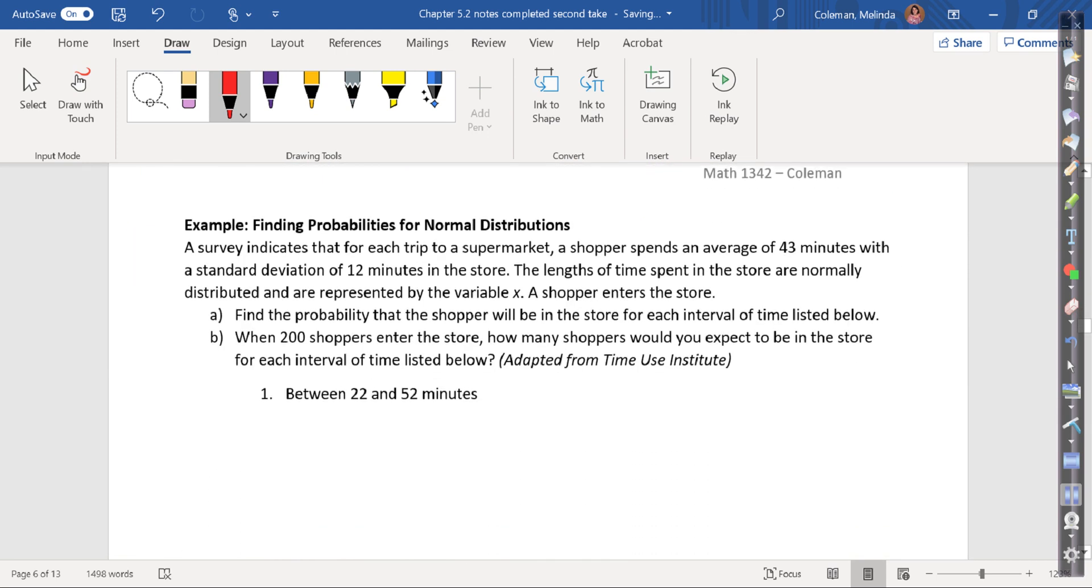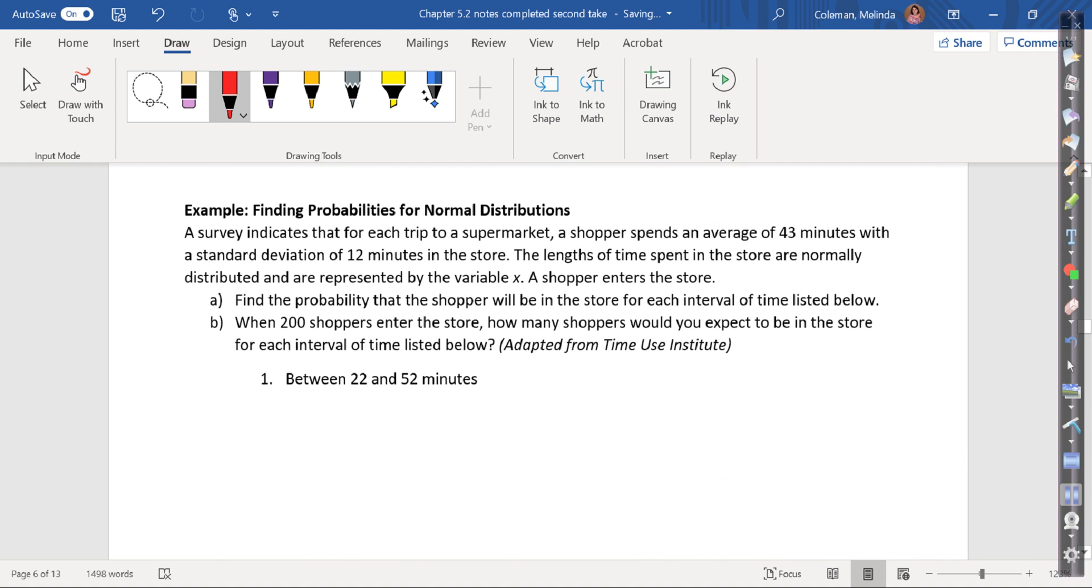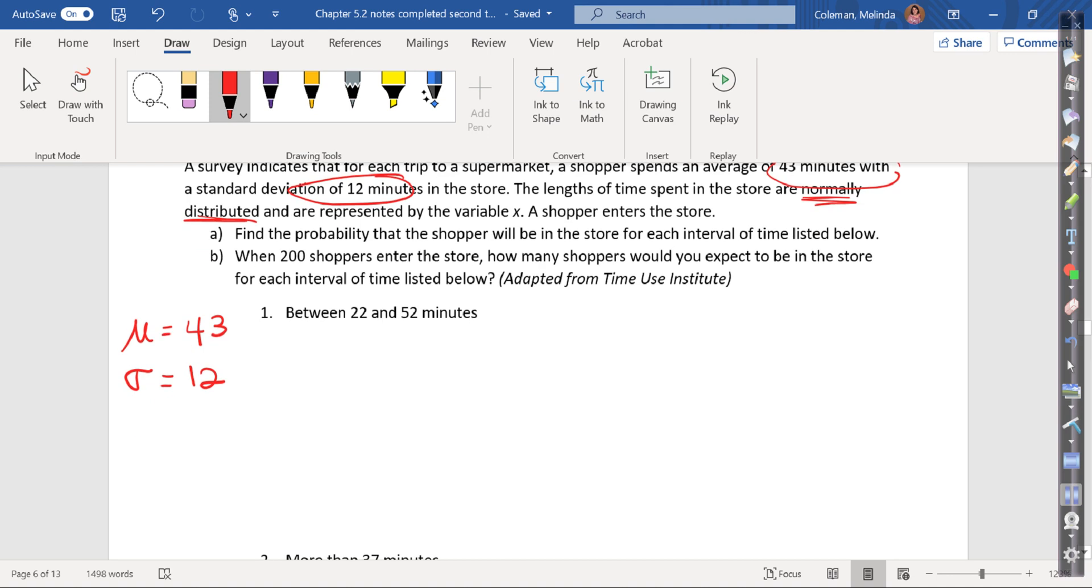Okay, the second example says: The survey indicates that for each trip to a supermarket, the shopper spends an average of 43 minutes with a standard deviation of 12. So 43 minutes with a standard deviation of 12. The length of time in the store is normally distributed, which is good because they need to be so we can use the information we have available. The variable x is what we're using. So it's asking us to find two different times. Part A says, find the probability that the shopper will be in the store between 22 and 52 minutes.